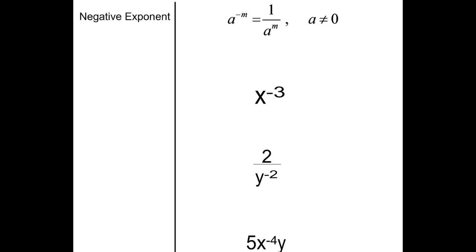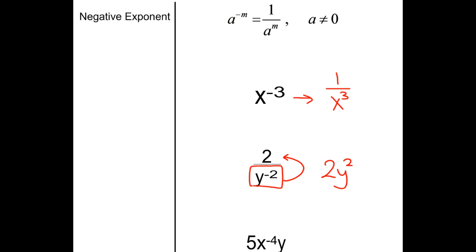Now the negative exponent: a negative exponent means you take that base and exponent and put them on the bottom — you make it the reciprocal — and when you do that, the exponent becomes positive. So a to the negative m equals 1 over a to the m, and it only works when a doesn't equal 0 because we can't divide by 0. So x to the negative 3rd is the same as 1 over x to the 3rd. For 2 over y to the negative 2nd, the negative means reciprocal, so the y squared moves to the top: it becomes 2 times y to the 2nd.